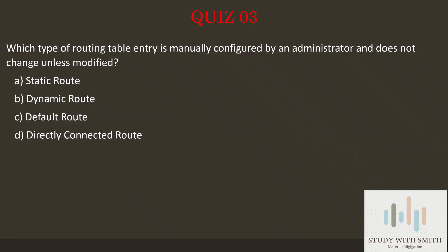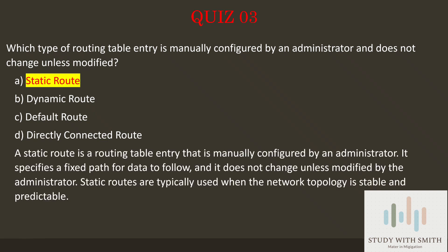Question 3: Which type of routing table entry is manually configured by an administrator and does not change unless modified? The answer is A: Static route. A static route is a routing table entry that is manually configured by an administrator. It specifies a fixed path for data to follow, and it does not change unless modified by the administrator. Static routes are typically used when the network topology is stable and predictable.